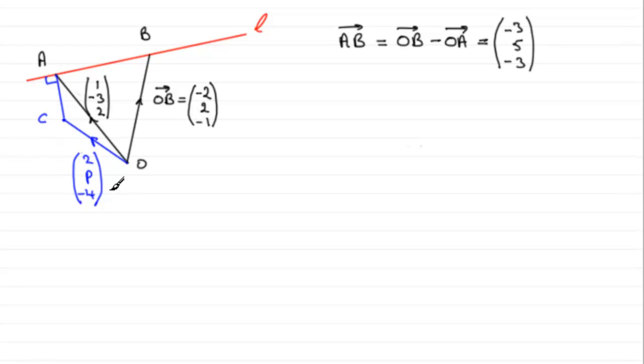So how are we going to do that? Well, what we need to remember is that if you do the scalar product or dot product between two vectors, if they're perpendicular, it will come to zero. So in other words, if you were to look at the vector CA dotted with the vector AB, then that would equal zero.